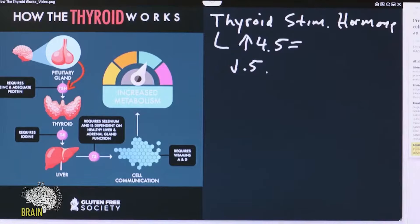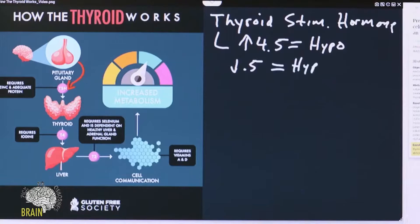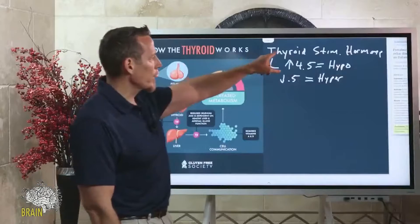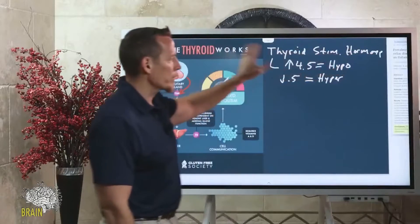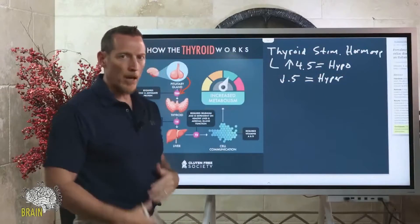If it's higher than 4.5 they're going to call that hypothyroidism; if it's lower than 0.5 they're typically going to call that hyperthyroidism. Most doctors today only measure TSH — they don't bother with any of the other thyroid markers.